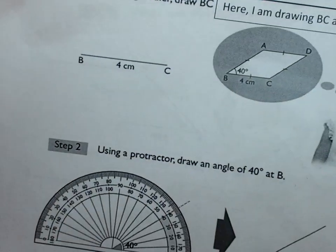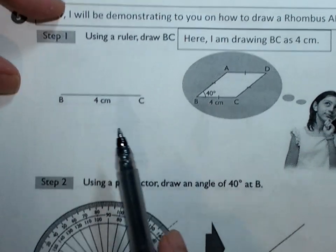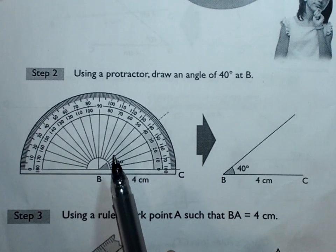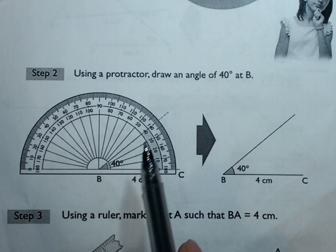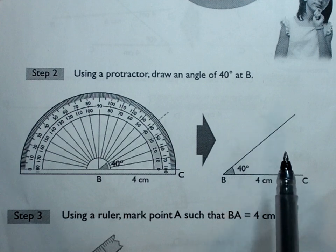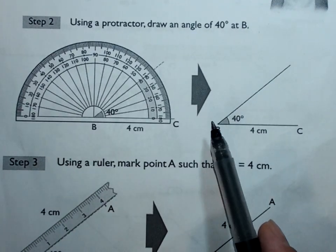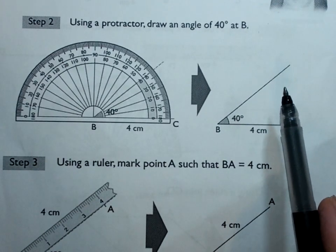So as usual, visualize and draw the baseline. Then from B, put a protractor. Mark up this 40 degrees angle, so it looks something like this. Then later on, with the ruler, measure this line, 4 cm.